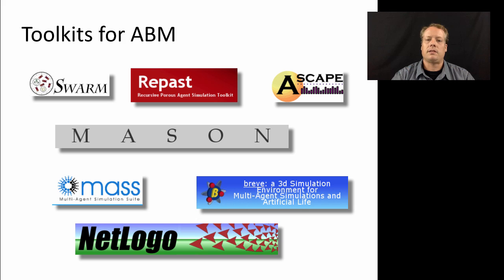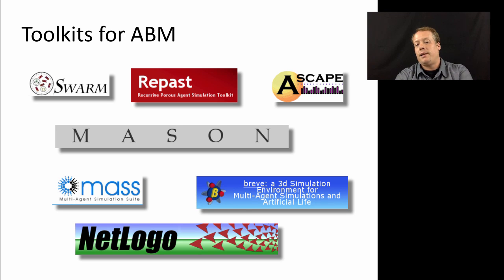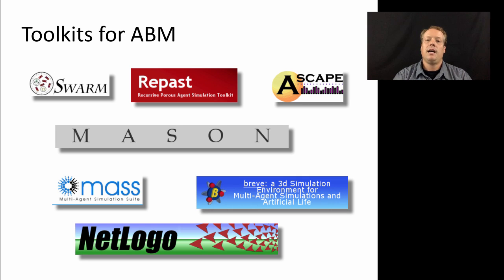Mason was developed at George Mason University in part by Sean Luke, and is a very fast and efficient agent-based toolkit. MASS comes out of Hungary, developed by Laszlo Gulyas and colleagues, and stands for the Multi-Agent Simulation Suite. Breve is an interesting lightweight agent-based modeling simulation toolkit that allows you to explore some of the physical aspects of building agent-based models.